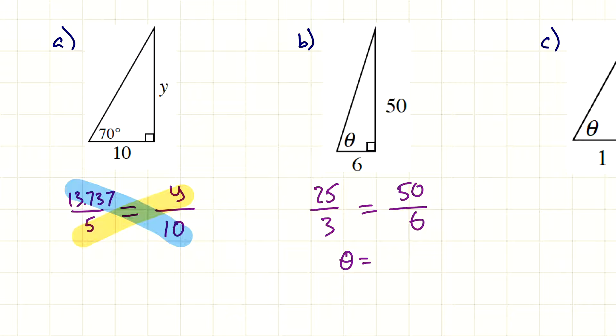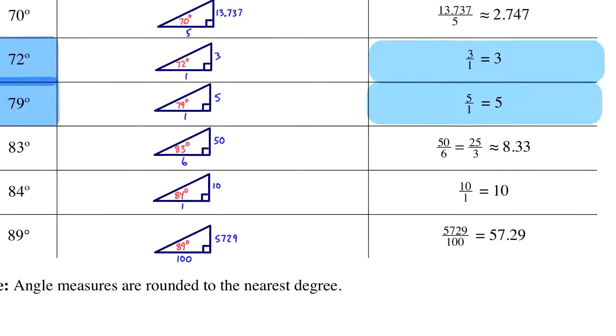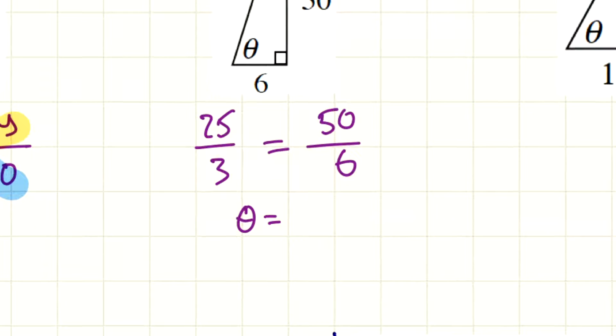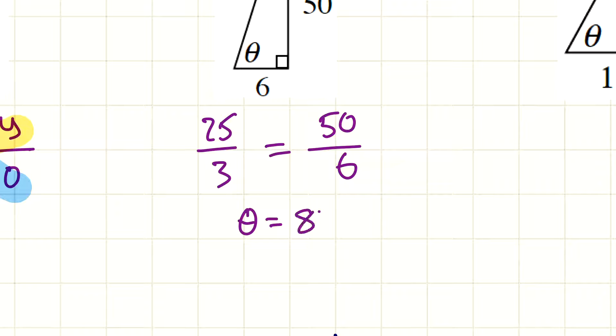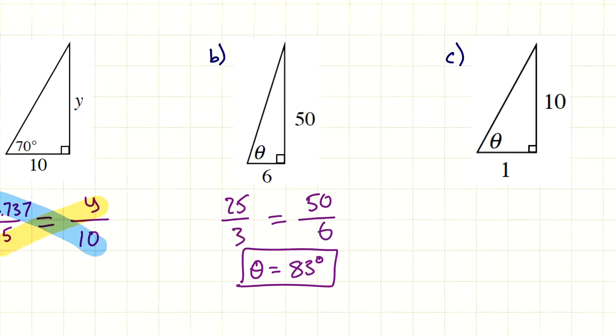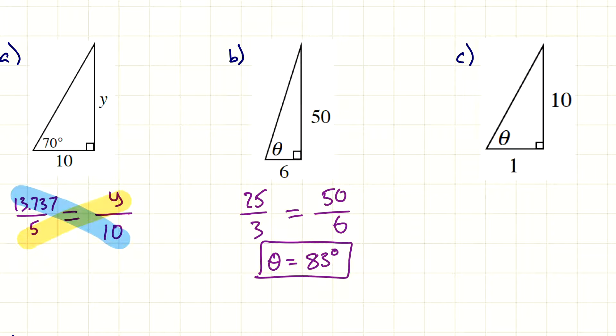50 over 6 or 25 over 3. What I'm going to look for, if the goal is to figure out what theta is, then I'm going to look in the table for maybe either one of these fractions would be useful. I'll just start at the bottom. I think this is it. 50 over 6, 25 over 3. Found it. So this is going to be 83 degrees. Theta, in this case, is 83 degrees. I would expect you to set up a proportion always.